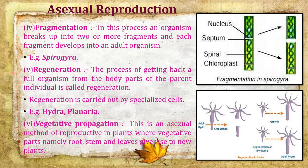Next is fragmentation. As the name suggests, the organism divides into different fragments. Each fragment forms a new individual. Example: spirogyra. In this process, an organism breaks up into two or more fragments and each fragment develops into an adult organism.